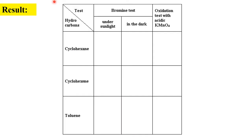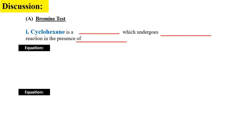For the results, you can tabulate a table with two tests. The first is the bromine test under two conditions: under sunlight and in the dark. Check what happens with cyclohexane, cyclohexene, and toluene. The second test is the oxidation test with acidic KMnO4. The original color of KMnO4 is purple — check what color the purple solution changes to.